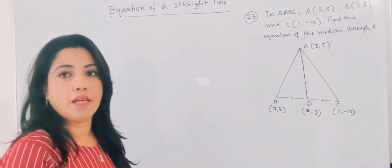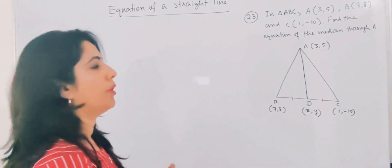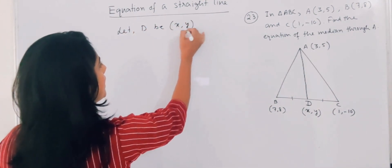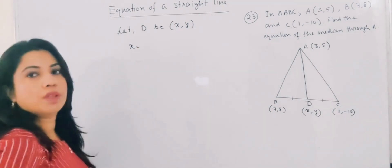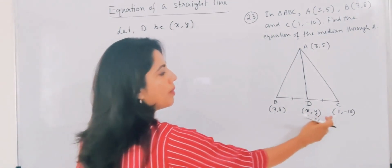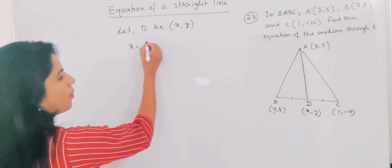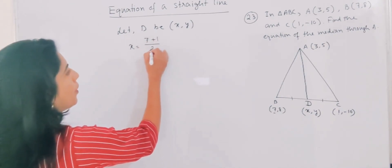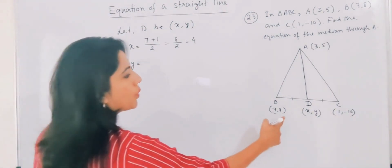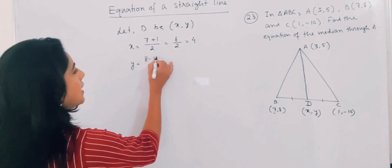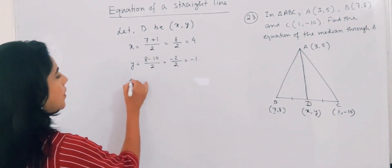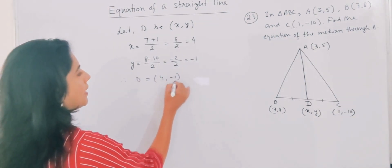Let D be (X, Y). So X equals the midpoint formula: (7 + 1) / 2 = 8/2 = 4. And Y equals (8 + (-10)) / 2 = -2/2 = -1. Therefore D is (4, -1).